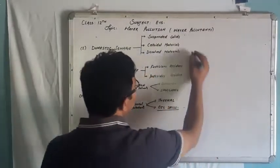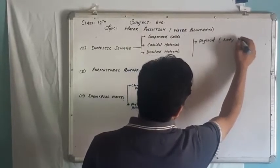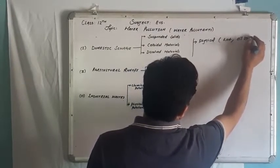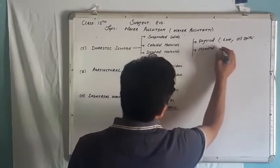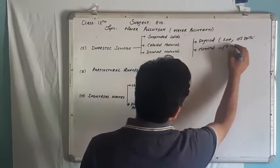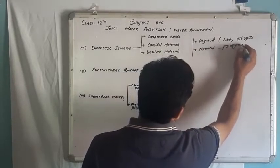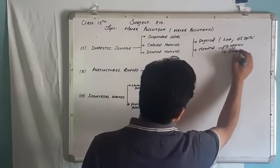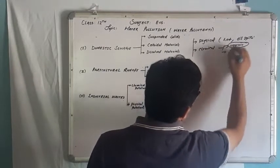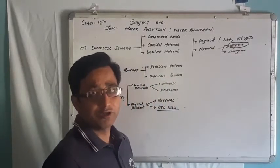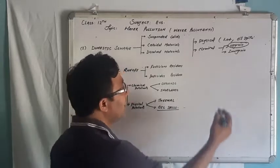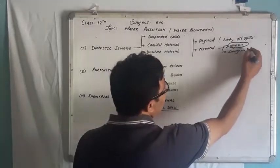Water pollutants can be divided into three categories. Physical water pollutants include heat and oil spills. Chemical water pollutants are further divided into two sub-categories: organic and inorganic. Organic pollutants include substances like pesticides and polychlorinated biphenyls (PCBs).